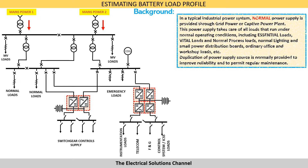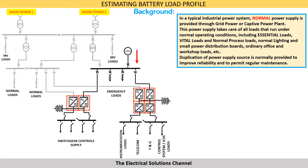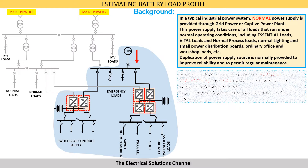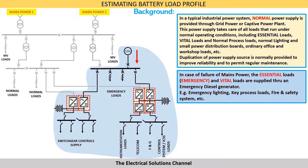In a typical industrial power distribution system, normal power supply is provided through grid power or a captive power plant. This power supply takes care of all the loads that run under normal operating conditions, including essential loads and vital loads. Duplication of the power supply source is normally provided to improve reliability and to permit regular maintenance.